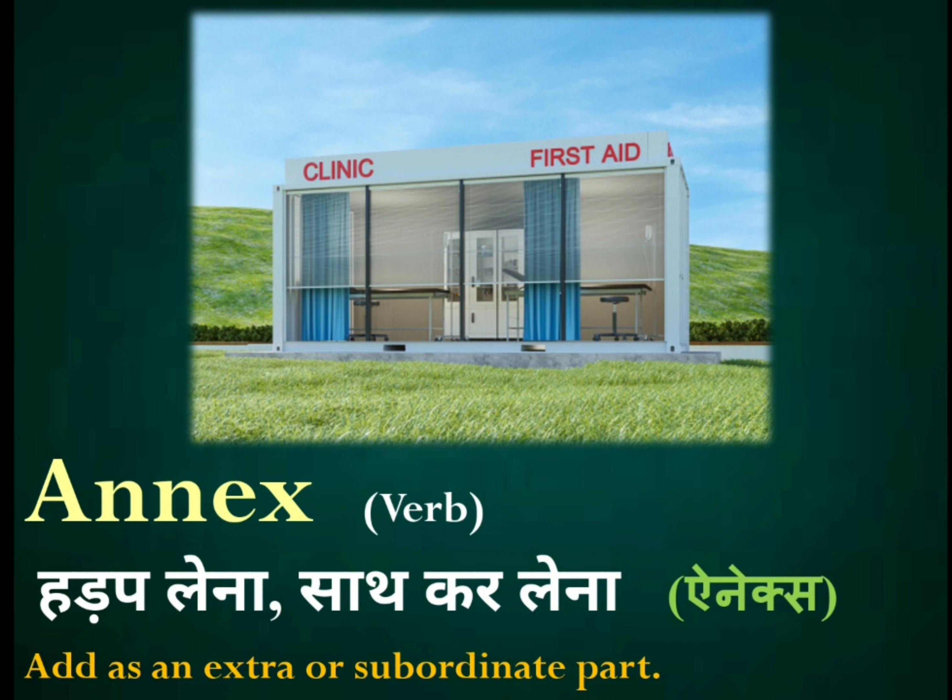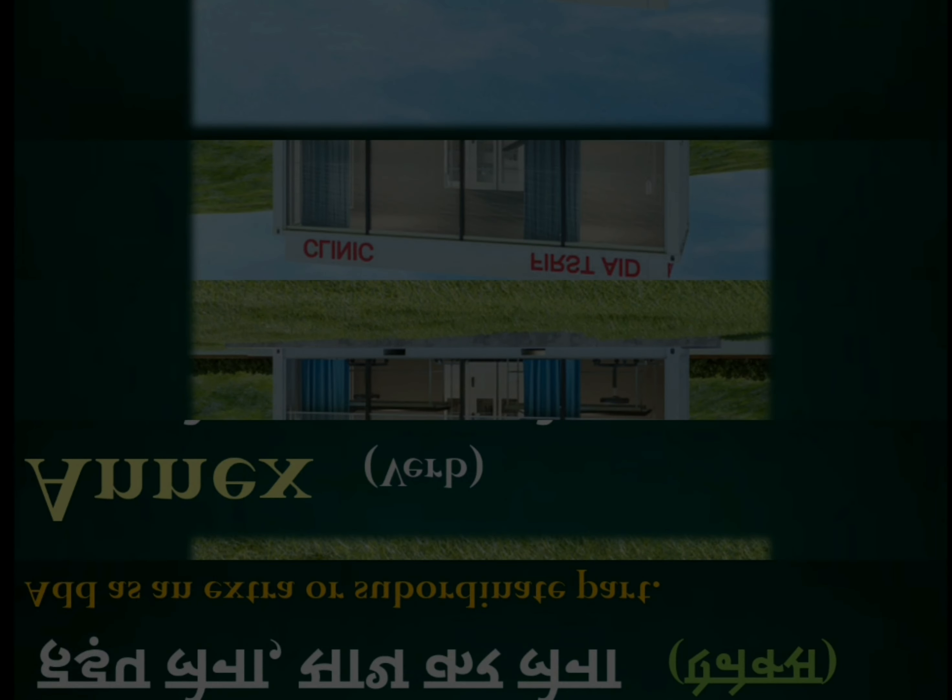For example, you have a house and there is a connecting land that you have annexed with your house and purchased it. You have annexed it with your house and made a garden. So you have added it as an extra or subordinate part — that is what 'annex' means.